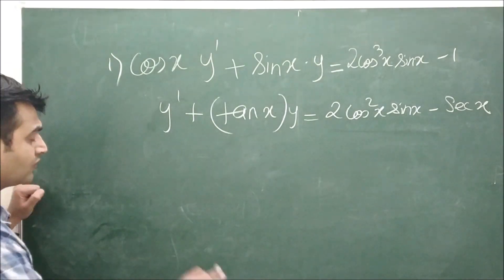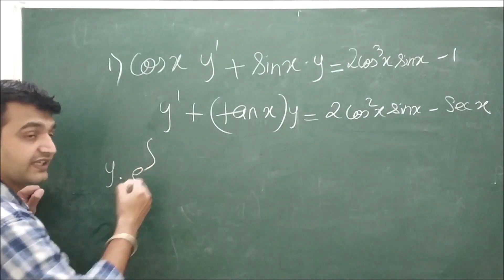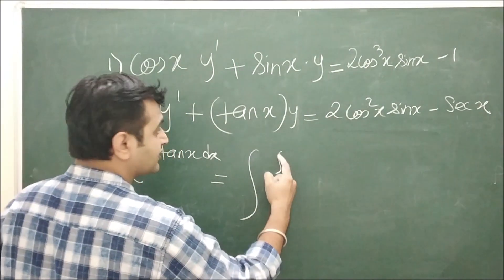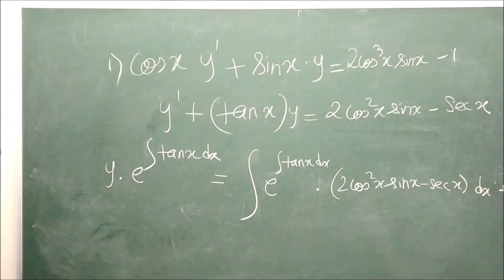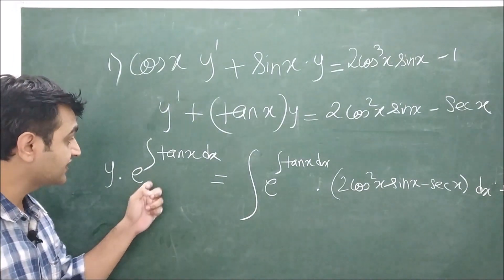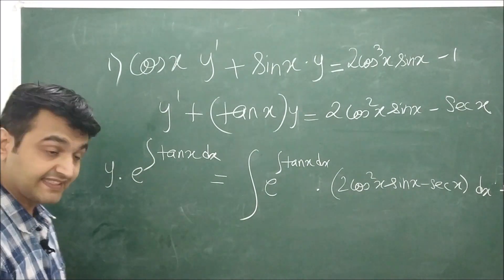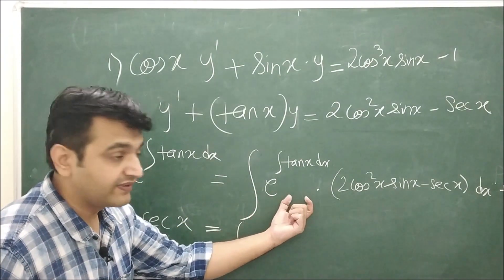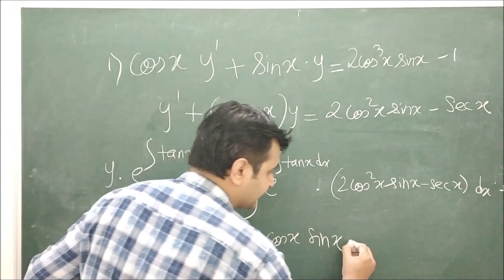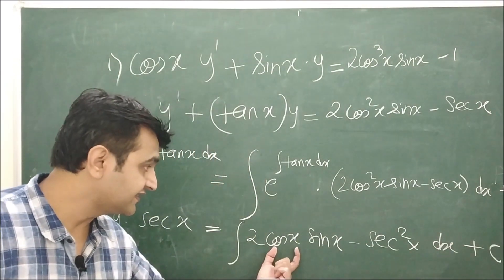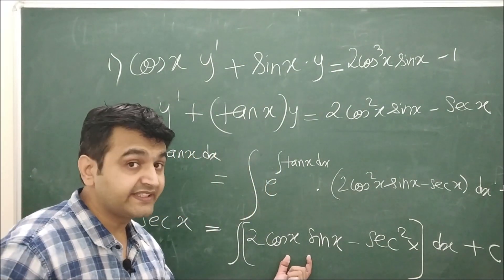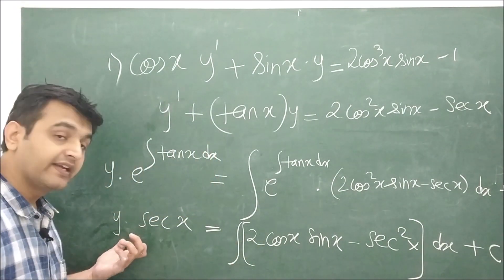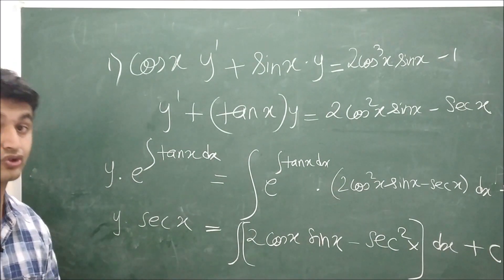Here P = tan(x). Using the formula: y·e^(integral tan x dx) = integral of [e^(integral tan x dx)·Q(x)] dx + C. The integral of tan x is ln(sec x), so e^(ln sec x) = sec x. Therefore y·sec x = integral of sec x · Q(x) dx + C. Expanding inside gives 2cos(x)sin(x) − sec²(x), which equals sin(2x) integrated as −cos(2x)/2, plus the integral of sec x·tan x.